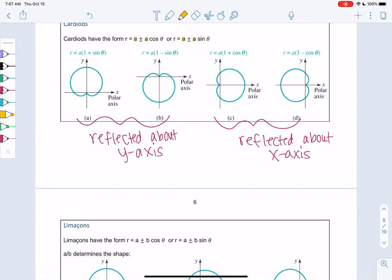So now we have a new shape called a limaçon. Kind of a weird word. It's a similar form, but it's A plus or minus B times sine or cosine. So A and B are different values. Cardioid is a special case where A and B are equal to each other. So we get a cardioid when A and B are the same. Otherwise, if they're different, we get this new shape called a limaçon.